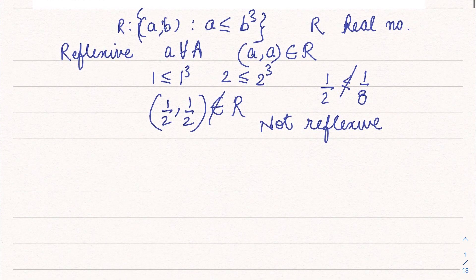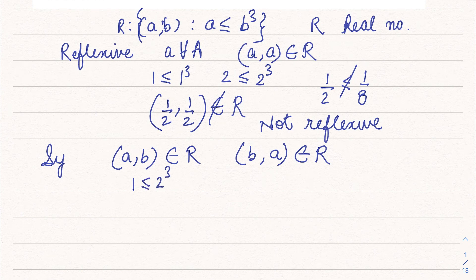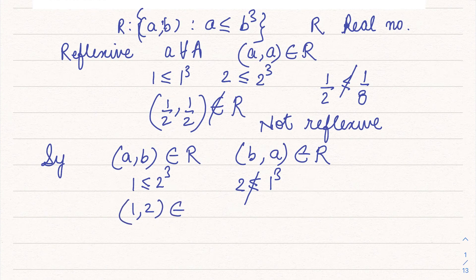Let's check the symmetric condition now. The symmetric condition is: if (a, b) belongs to R, then (b, a) should also belong to R. Let's take a = 1 and b = 2. So 1 ≤ 2³ = 8, that is true. But if I take (2, 1): is 2 ≤ 1³ = 1? That is false. So (1, 2) belongs to R, but (2, 1) does not belong to R. Therefore this is not symmetric.